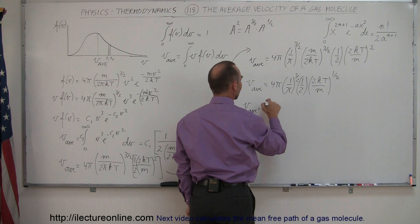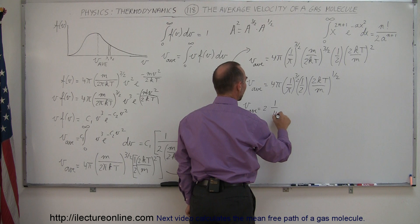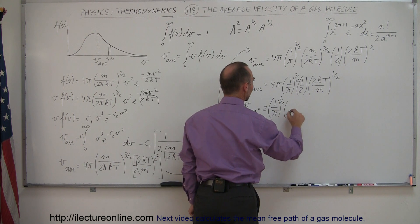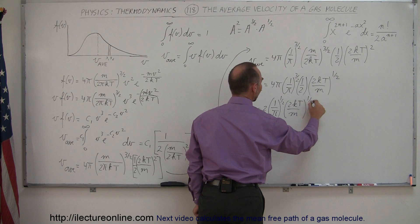So V average is equal to 4 divided by 2, which is 2, times 1 over π to the 1 half power, times 2KT over M to the 1 half power. And then I can combine these two.